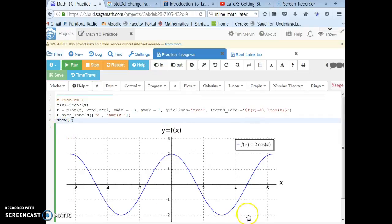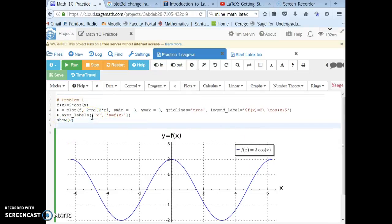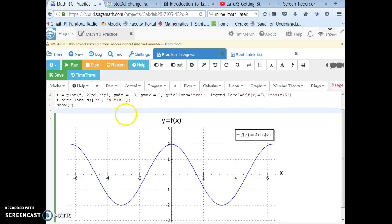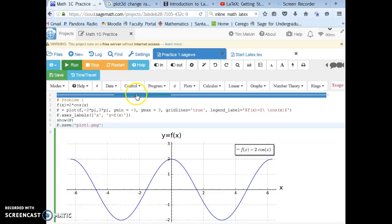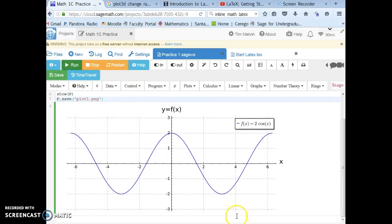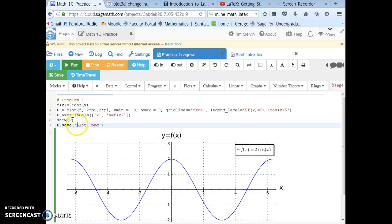There's more than one way to do this. You could take a snippet or picture of this. I'm going to stay inside the Sage math cloud. I'm going to type p.save parentheses, and then I'm going to call this plot1.png surrounded by parentheses.